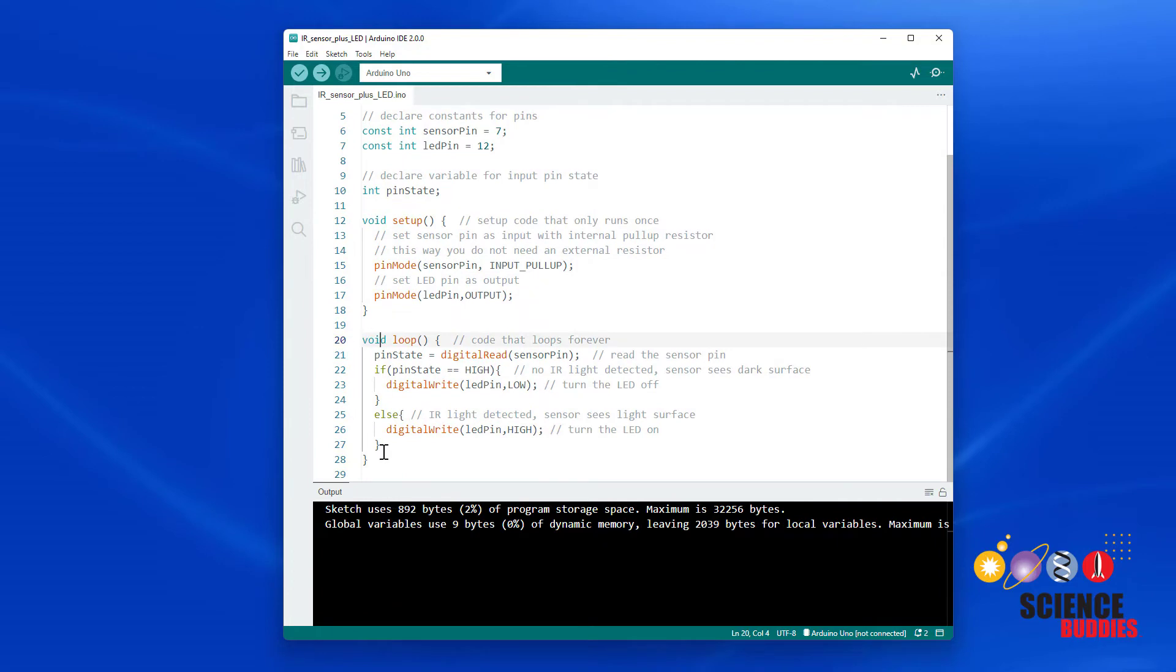Finally in our loop we have pretty much the exact same code you would use with a button. We use the digital read command to read the value of our sensor pin and store that in the pin state variable.